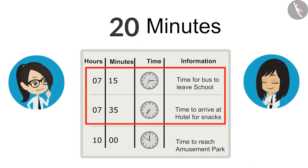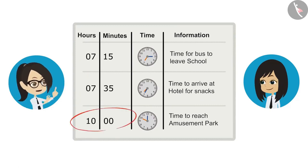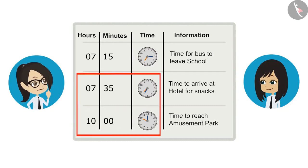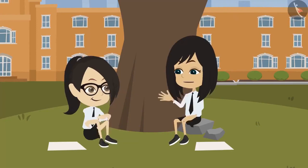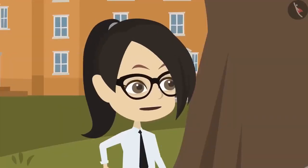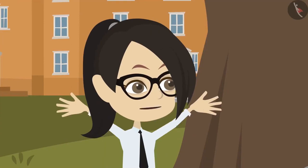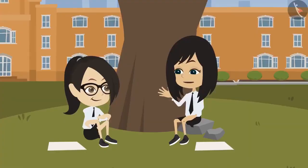This was really very easy. Now we know that we have to reach the amusement park at 10 o'clock. If we also know how long it takes to go from the hotel to the amusement park, then we will be able to tell at what time we should leave the hotel. Sir has said that it takes 55 minutes from hotel to reach the amusement park. Then let's draw 10 in the clock and rewind the minute hand 55 minutes behind.